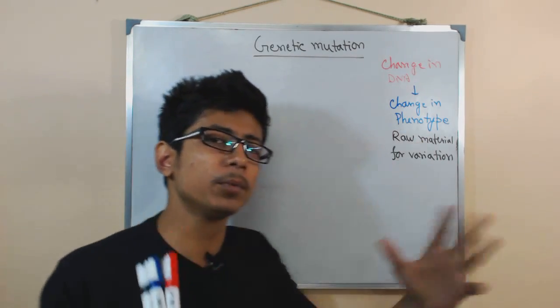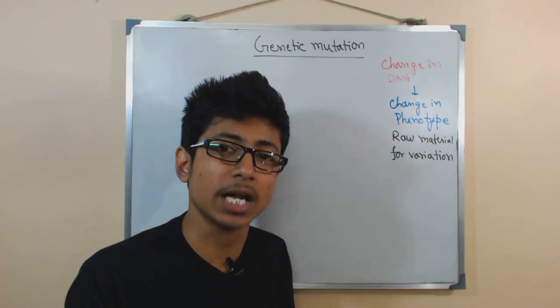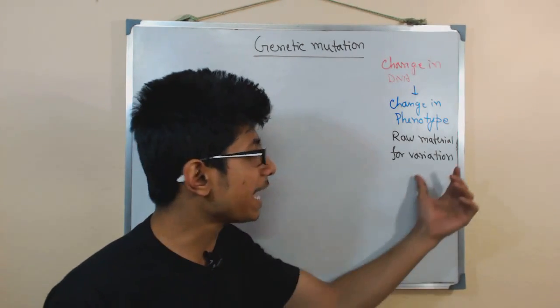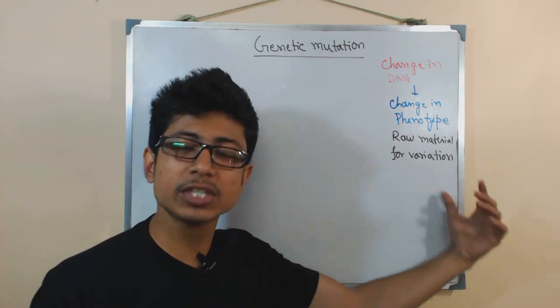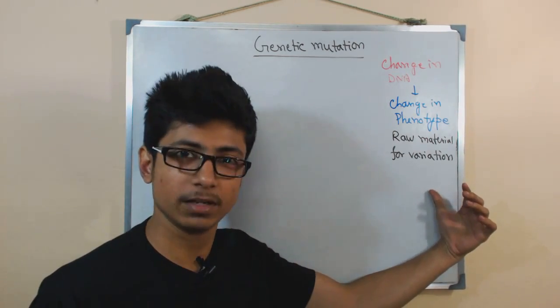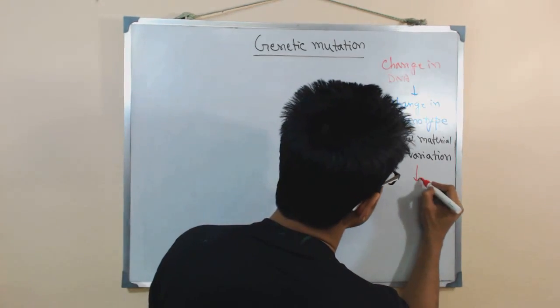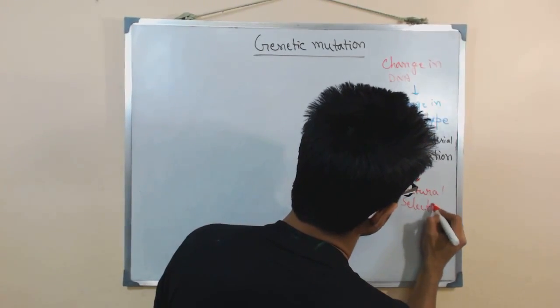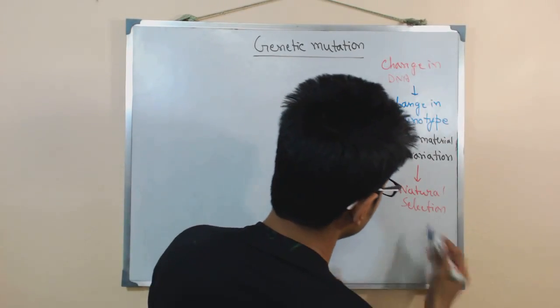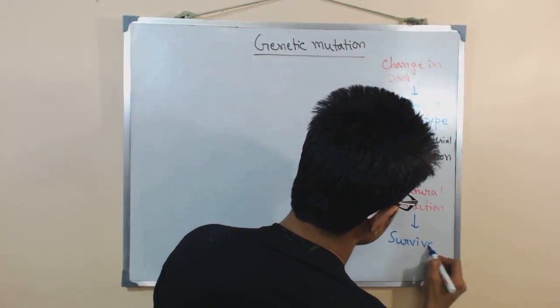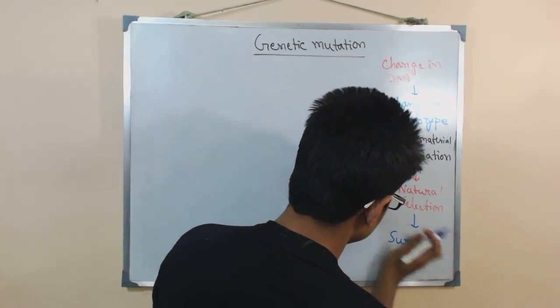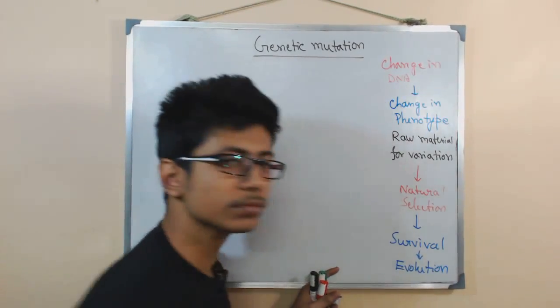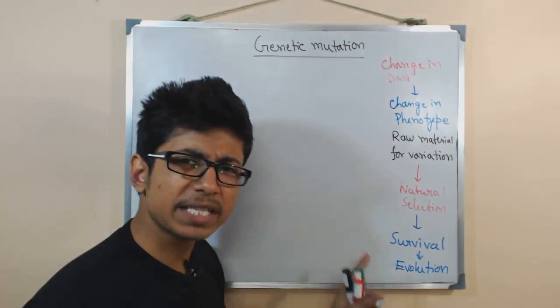And sometimes if you look at the whole population level, in some cases mutation gives something extra advantage to the population to survive in natural selection. That occurs because variance helps in natural selection and helps in survival. So here comes the link between all this: natural selection, and finally, it can help in survival and evolution. Survival after natural selection means evolution. So this is the basic thing about mutation.